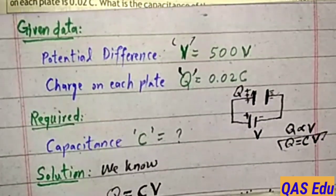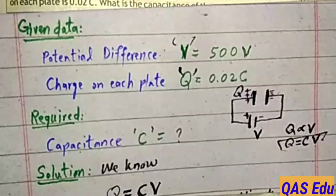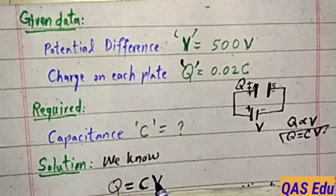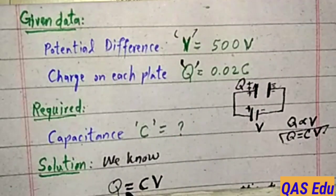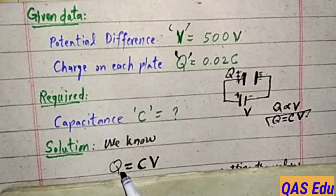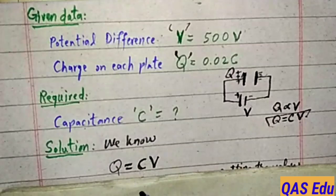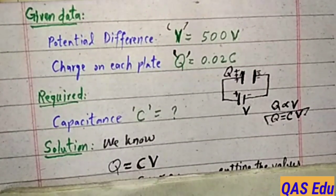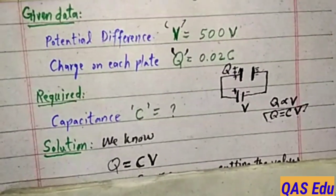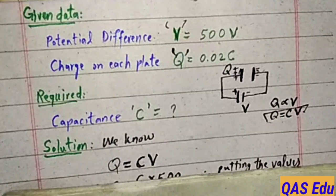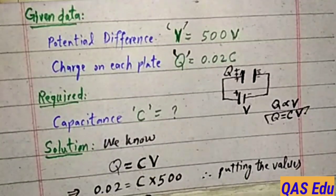We'll use the solution Q equals CV. We know both Q and V. Sometimes in questions Q and V are given, find C. Sometimes V is given, Q and C are given, find V. The equation changes depending on the question. Now putting the values.